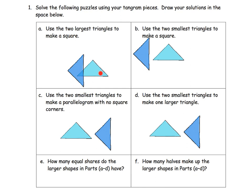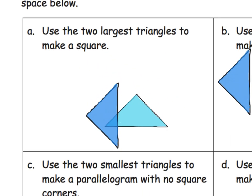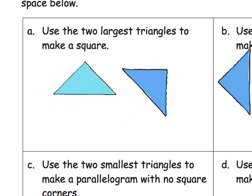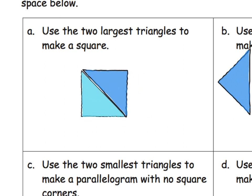Here, we're going to be using triangles. It says, use the following puzzles, use your tangram pieces and draw the solutions in the space below. I'm just going to use the tangram pieces itself. It says, use the two largest triangles to make a square. We're going to use those two triangles, and there we go. There is our square.